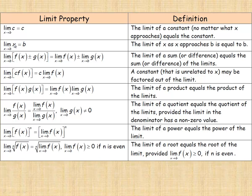If we change it so it's the limit of x as x approaches b, that equals b — because x is getting closer to the value of b, so the limit equals that number b. If you have the limit of a sum or difference, the limit as x approaches b of f(x) plus g(x) equals the limit of f(x) plus the limit of g(x). Similarly for subtraction: the limit of f(x) minus g(x) equals the limit of f(x) minus the limit of g(x).